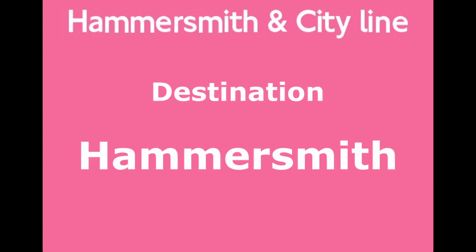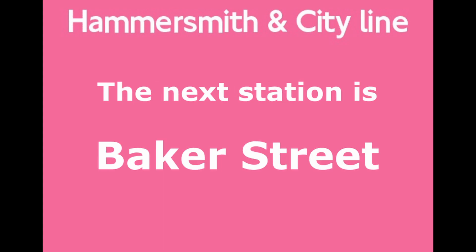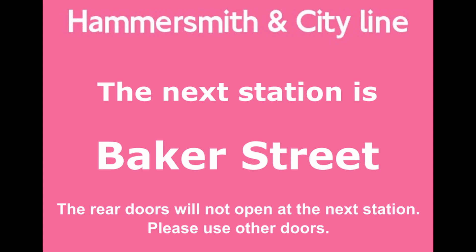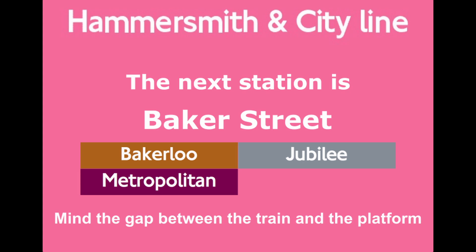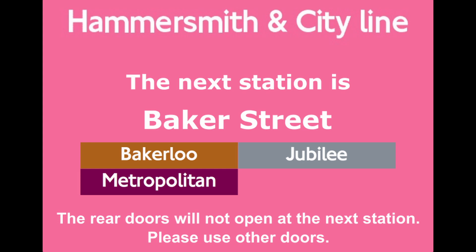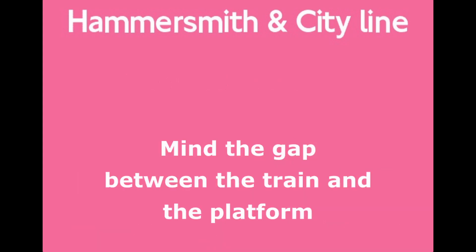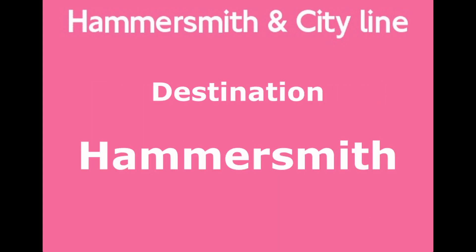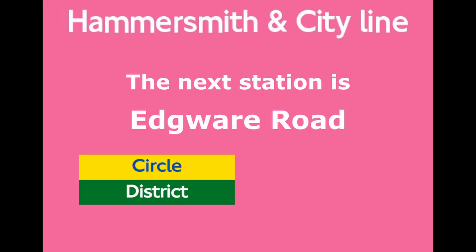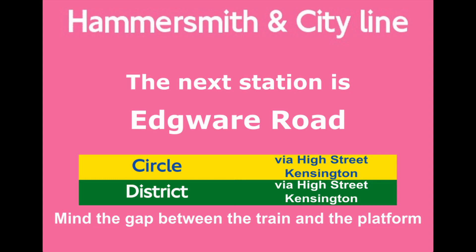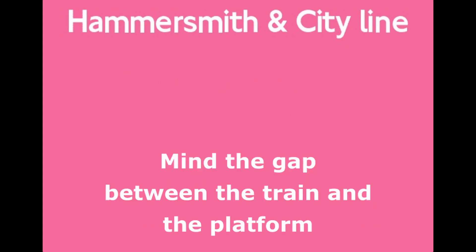This is a Hammersmith and City Line train to Hammersmith. The next station is Baker Street. The rear doors will not open at the next station. Change for the Bakerloo, Jubilee and Metropolitan Lines. Mind the gap between the train and the platform. Please use other doors. This is Baker Street — the rear doors will not open here, please use other doors. This is a Hammersmith and City Line train to Hammersmith. The next station is Edgware Road. Change for Circle and District Line services via High Street Kensington. Mind the gap between the train and the platform. This is Edgware Road.